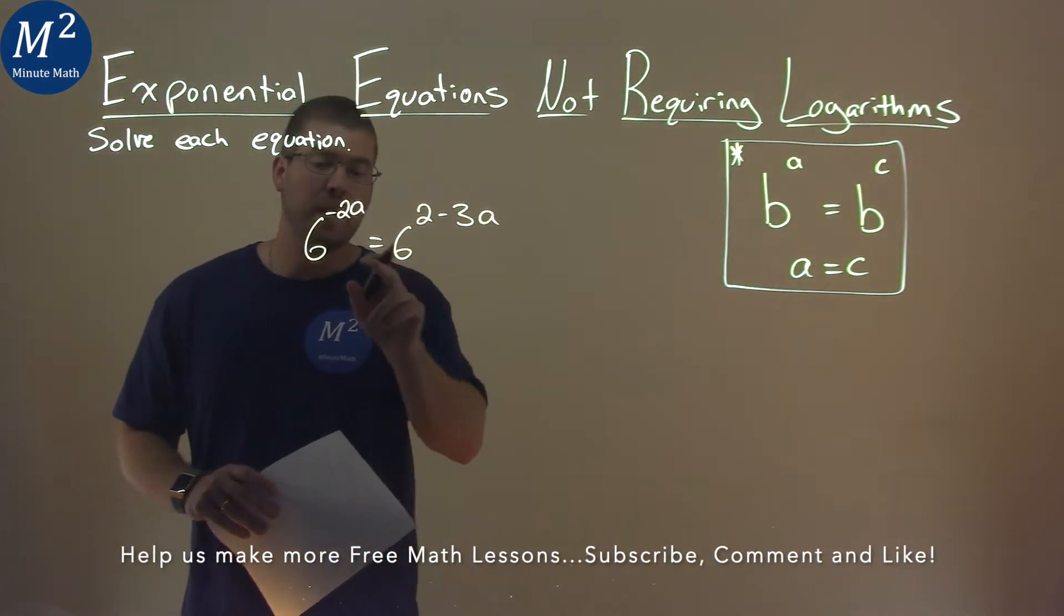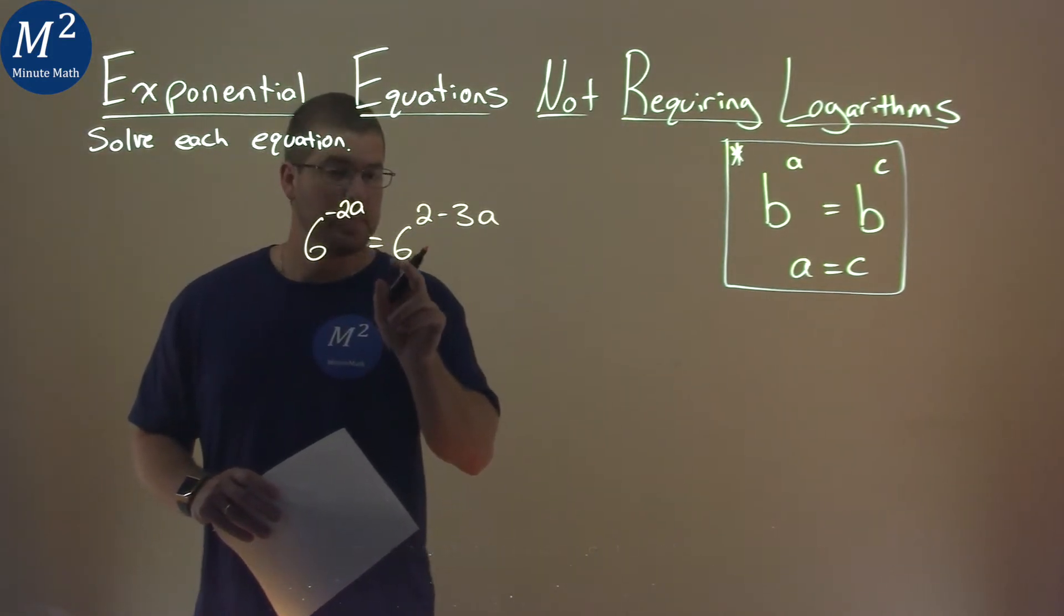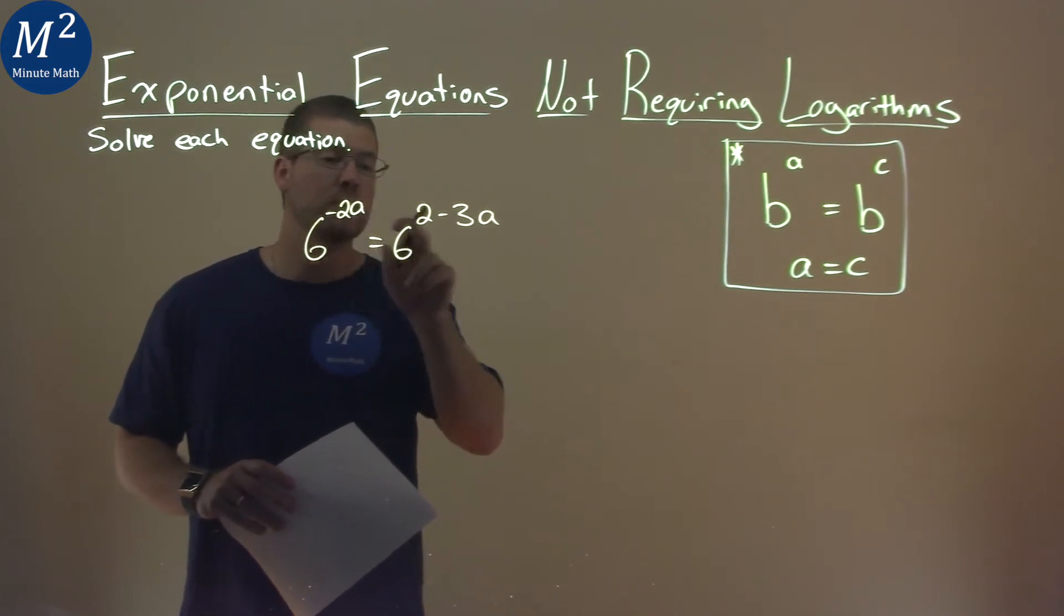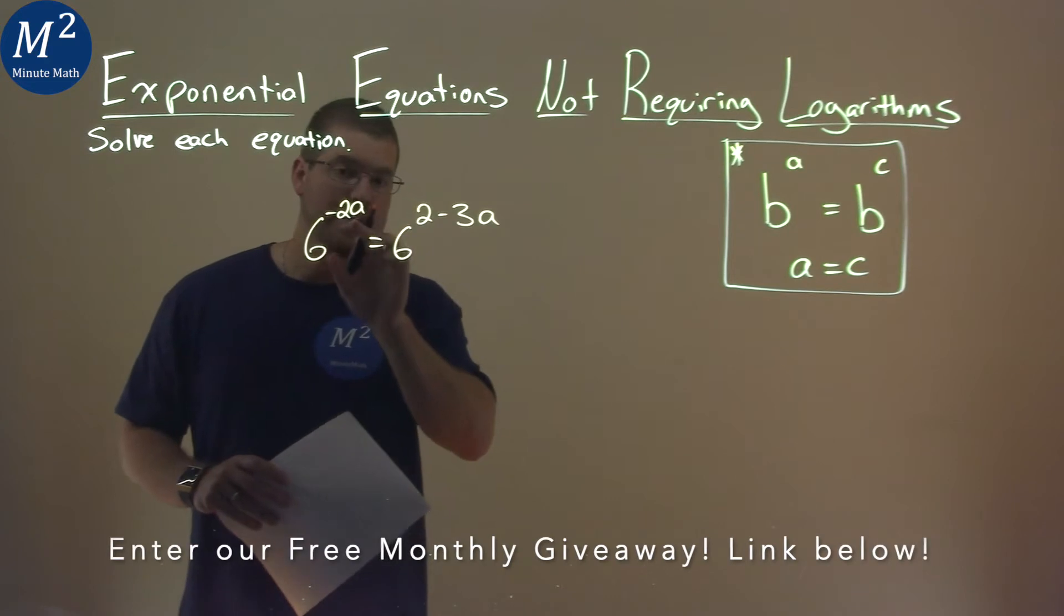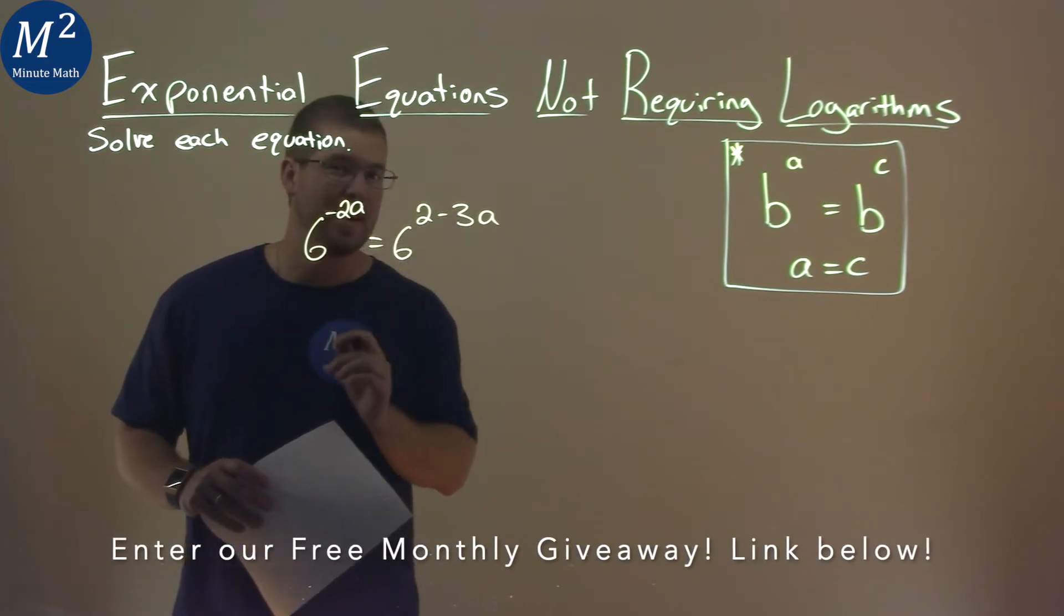Luckily we have the same base which is 6 here and when that happens that's the only thing on each side of the equal sign we can look to the exponents. We can take each one of these exponents and set them equal to each other.